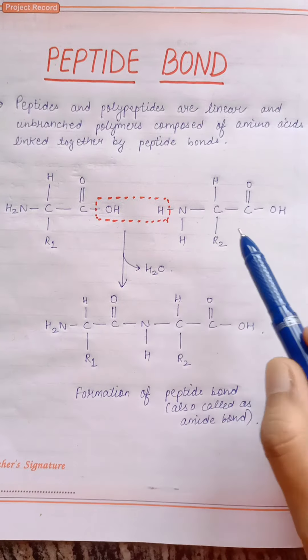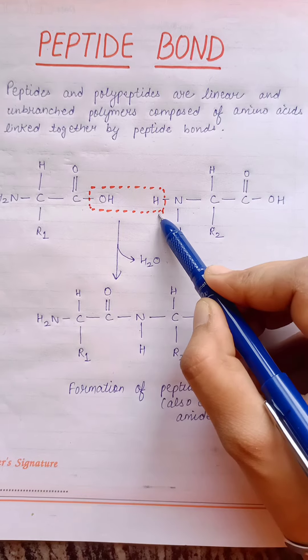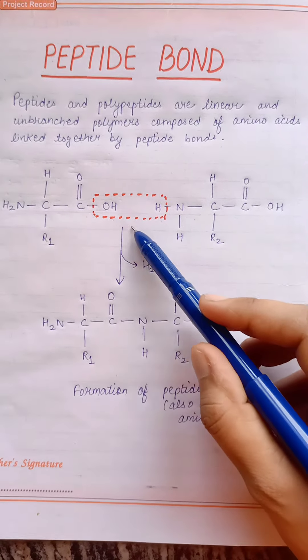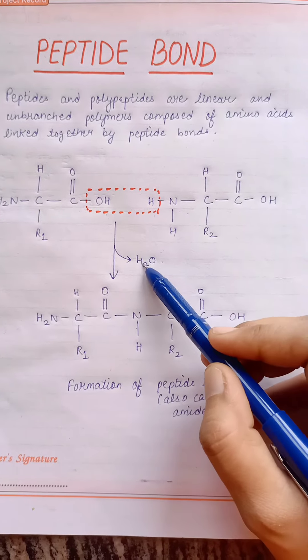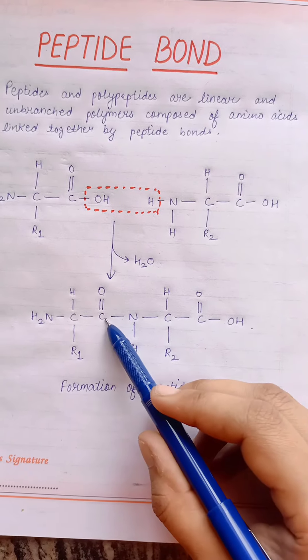As we can see in this reaction, the hydrogen from one amino acid and OH group from second amino acid is lost in the form of water and here the peptide bond is formed.